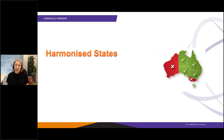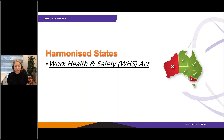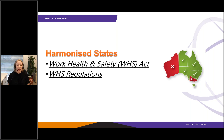In the harmonised states — meaning the states that have adopted the national model Work Health and Safety legislation — so those are all the states in Australia except Victoria and Western Australia — they all have legislation called the Work Health and Safety Act, WHS, and they also have WHS regulations.